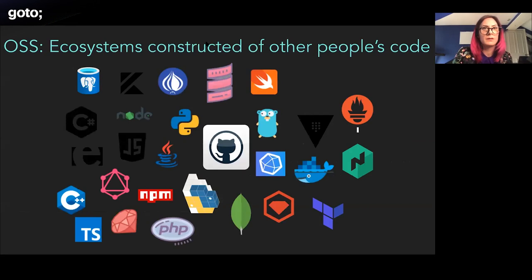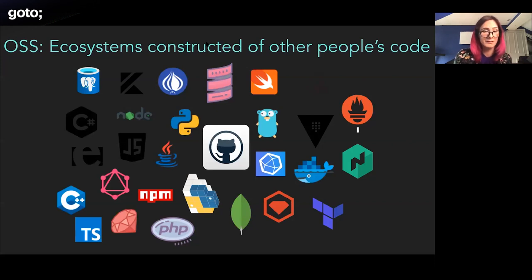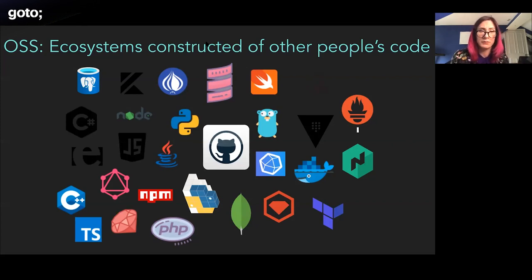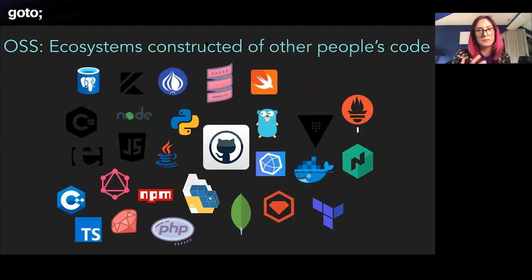A key thing to mention is that we're adopting a lot of open source technologies into our stacks and ecosystems. Over the last ten years this has become much more popularized. We're basically constructing ecosystems of other people's software, and with that comes risk around vulnerabilities being present and exploitable. Even highly regulated environments like banks are seeing more adoption of cloud-native technologies.